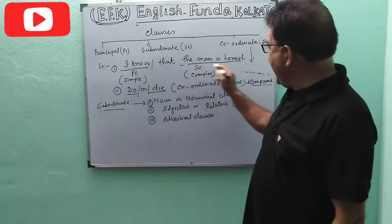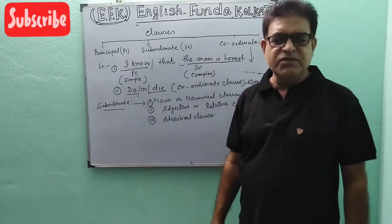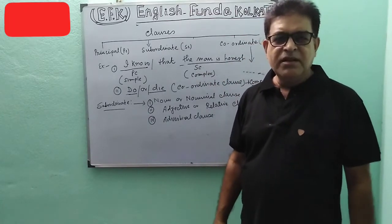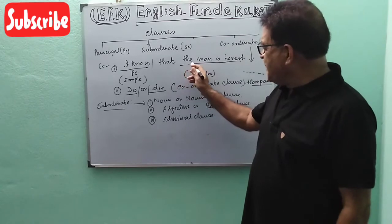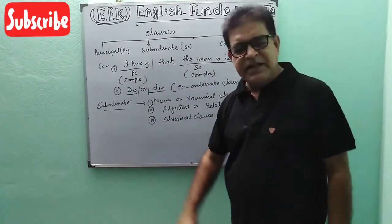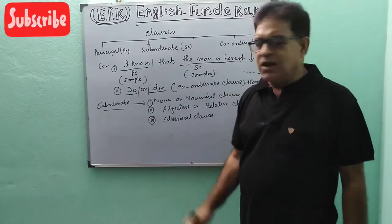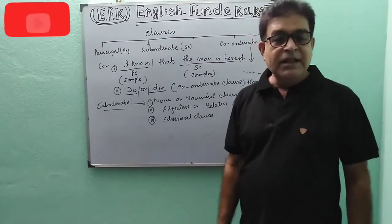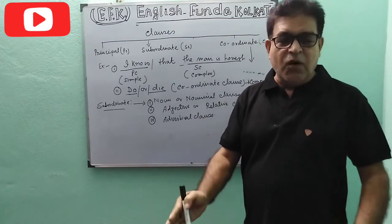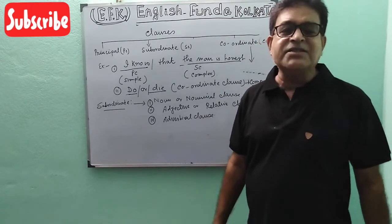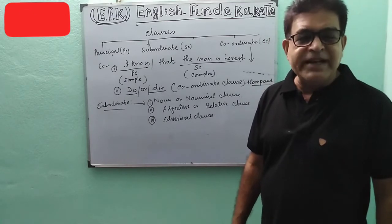'That the man is honest' is a Subordinate Clause, because this part of the sentence is depending on the Principle Clause. What is called a Subordinate Clause? A Subordinate Clause is a clause that cannot express its own meaning.